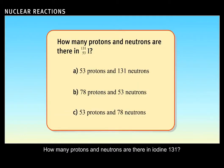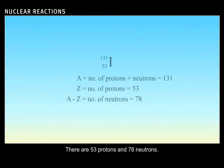How many protons and neutrons are there in iodine-131? Correct. There are 53 protons and 78 neutrons.